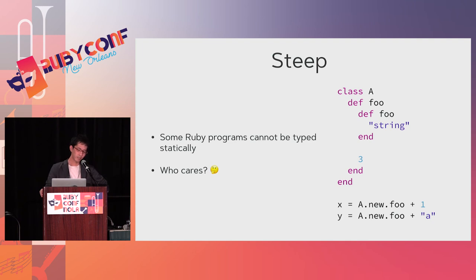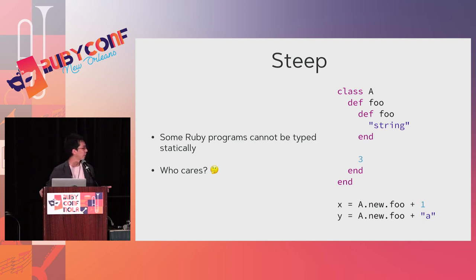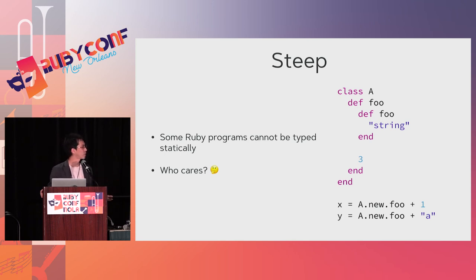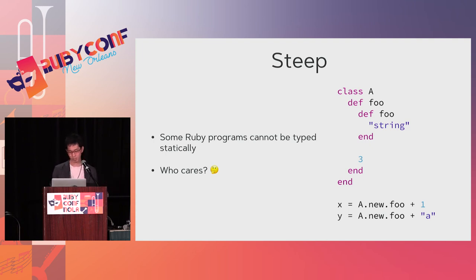Some Ruby programs cannot be typed statically using Steep. A simple example: defining a 'foo' method in class A that redefines itself when called — the first call returns integer 3 but also defines a new 'foo' that returns a string. Steep cannot give a good type for this kind of program. But in my opinion, who cares? Probably you don't write Ruby programs like this, and you don't want your teammates to either. So it's not a problem.